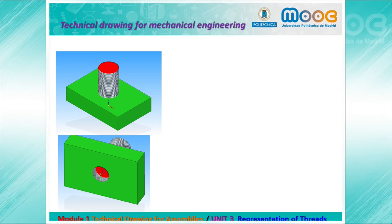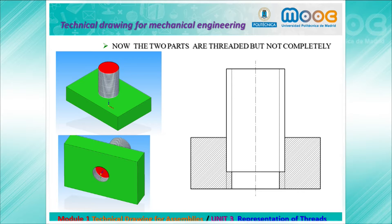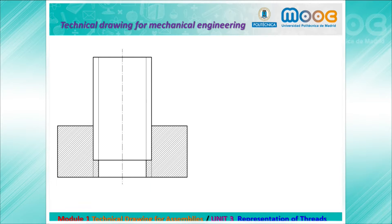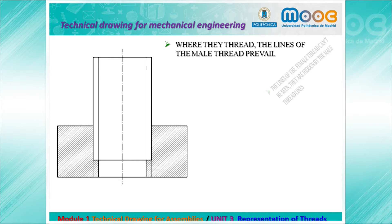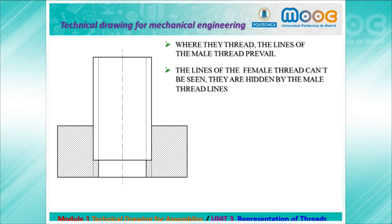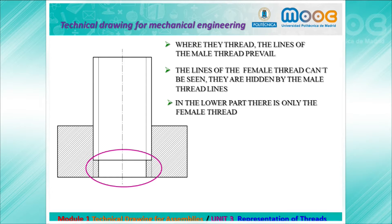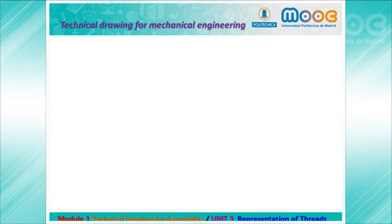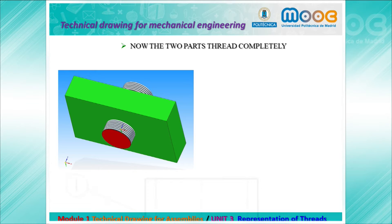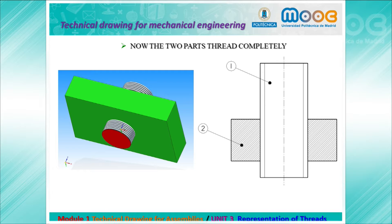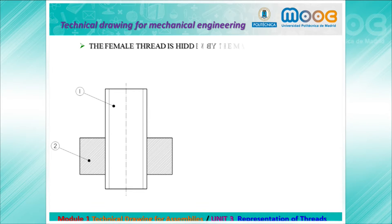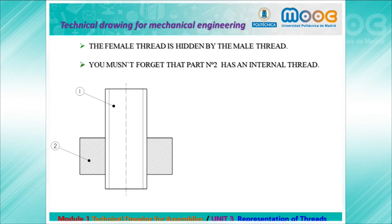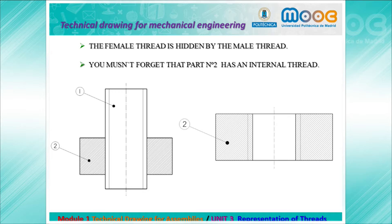Now we are going to start threading the two parts. When they are threaded, the lines of the male thread prevail. The lines of the female thread cannot be seen — they are hidden by the male thread lines. In the lower part there is only the female thread, and you can see the end of the female thread. When the two parts are fully threaded, the female thread is hidden completely by the male thread, but you must not forget that part number two must have a female (internal) thread.